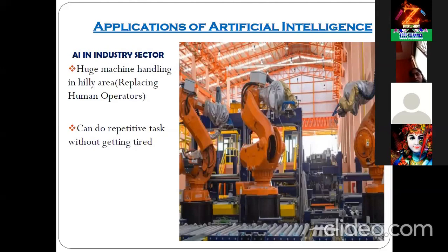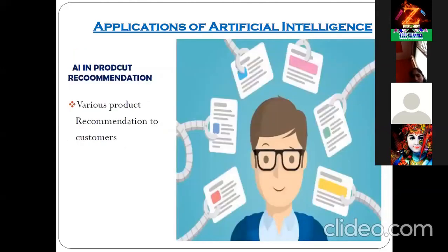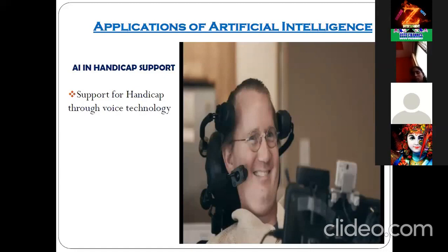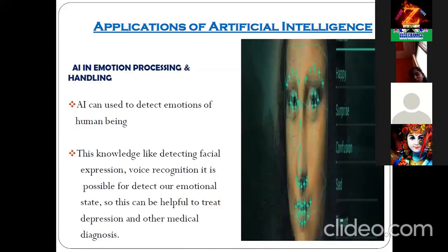We have already discussed AI in product recommendations to customers. Next is AI in handicap support — very useful, based on voice technology. For example, if a person has lost their hands in an accident, they cannot operate a mobile phone. But with Google Assistant and voice technology, they can operate the mobile through voice. That is a great example of AI for handicapped person support.